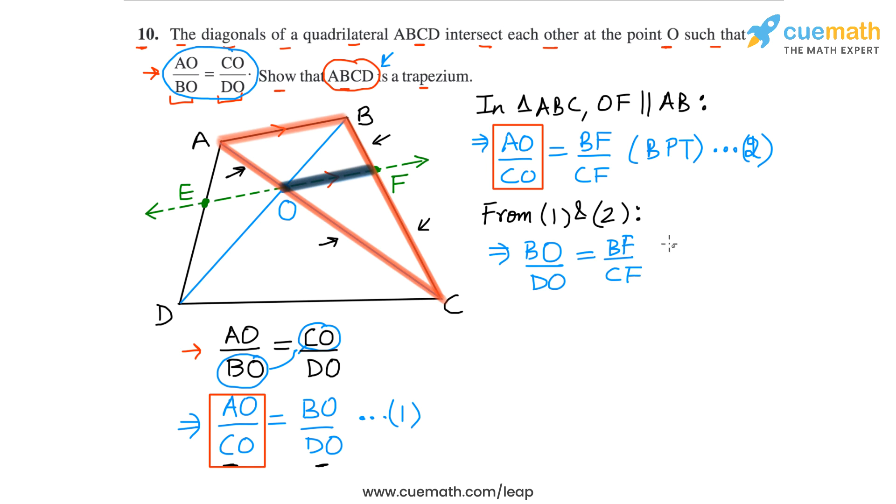Now if we use this equality of ratios in triangle BDC, if BO by DO is equal to BF by CF, this immediately tells us that OF, because it divides BD and BC in the same ratio, OF must be parallel to DC.